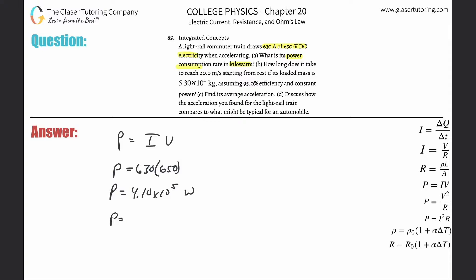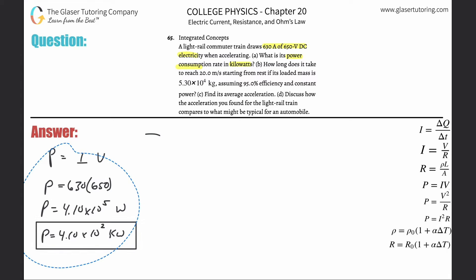This is going to be 4.10 times 10 to the second kilowatts. Done. All right, letter b. So let's take a look at letter b.